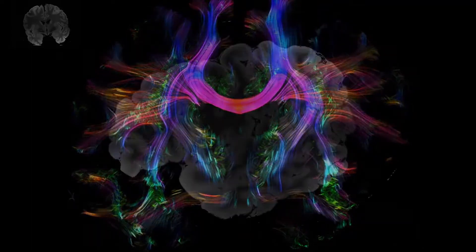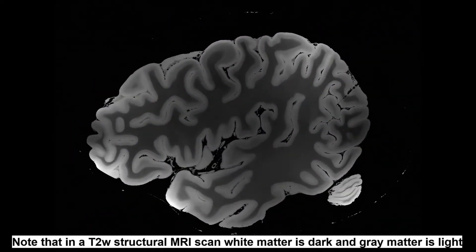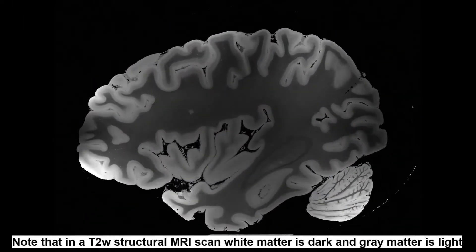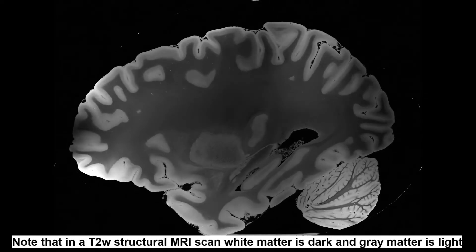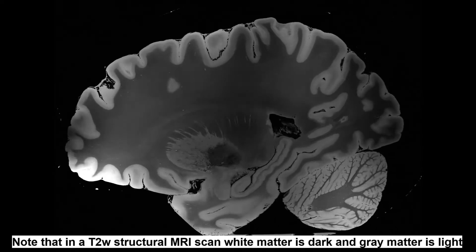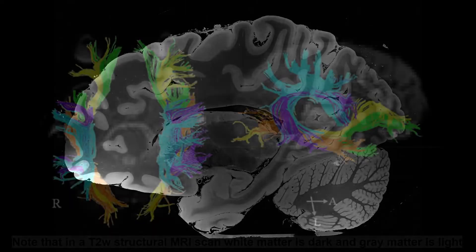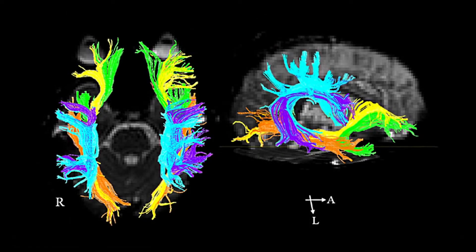With a standard structural MRI scan, white matter can be identified. However, it is very difficult to actually see the different connections and along which direction different axonal bundles are going. For that, we need DTI.